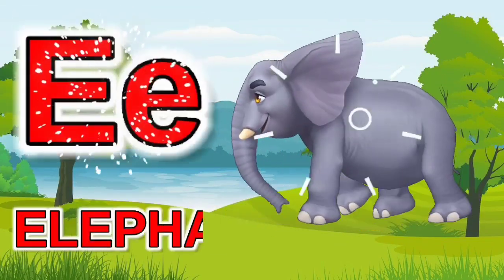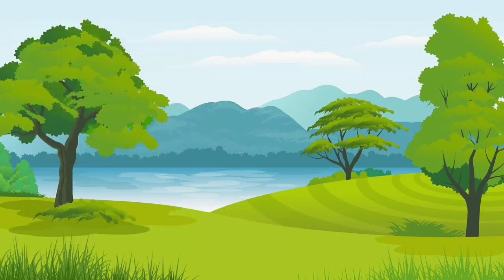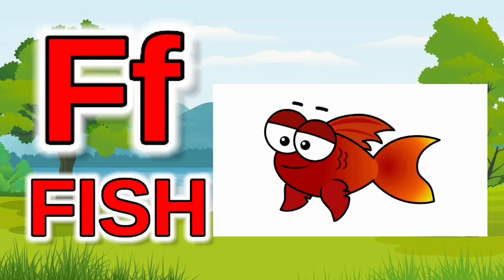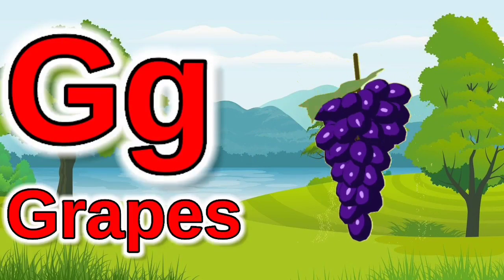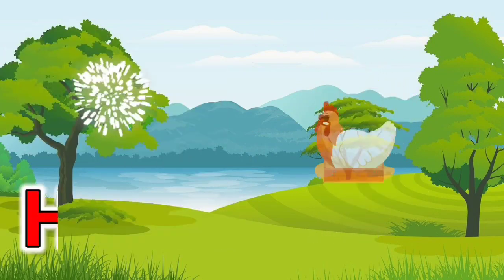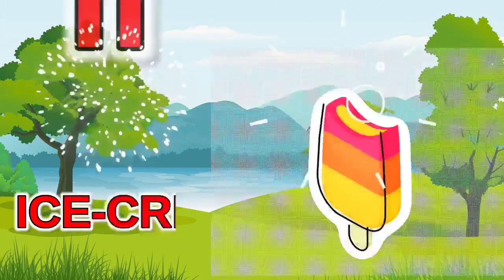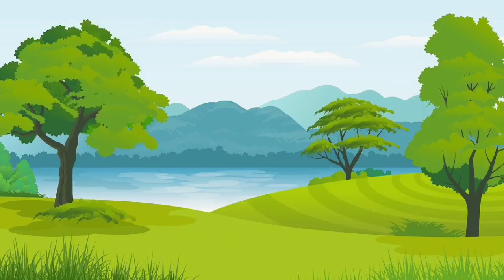E for elephant, F for fish, G for grapes, H for hen, I for ice cream.